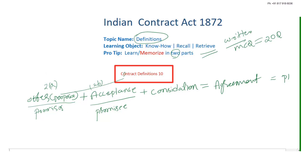Offer and Acceptance are defined under Section 2c and 2d. Agreement is under 2e. Here is a tip: Agreement is 2e, Contract is 2h. Agreement to Contract — that is a very important section. Contract is 2h, Agreement is 2e.